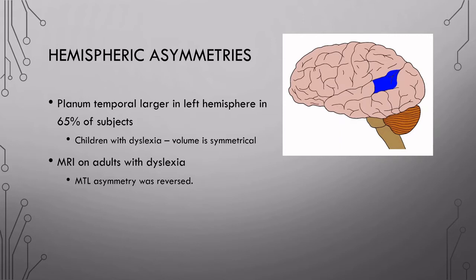Interestingly, as a side note, children with dyslexia don't show this normal asymmetry. The volume of this area is roughly symmetrical in these children. Other studies of humans with dyslexia have found similar patterns, also within the medial temporal lobe, where these normal asymmetries are kind of reversed. So it's interesting to see that structure is really driving function of the human brain in this case.